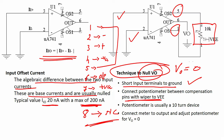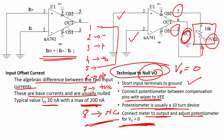Connect the potentiometer between the pins with the wiper connected to Vee. The potentiometer is typically a 10kΩ device. Connect a meter to the output and adjust the potentiometer until the output voltage reaches 0. By varying the potentiometer, you reach a value where output voltage Vo equals 0 — this is the technique to null your output voltage.